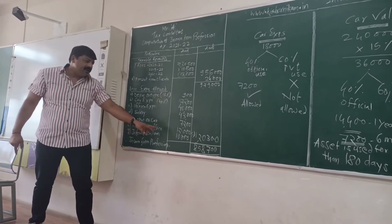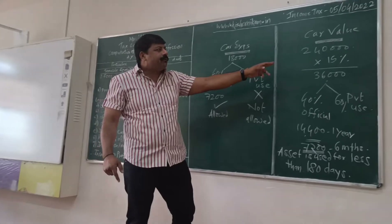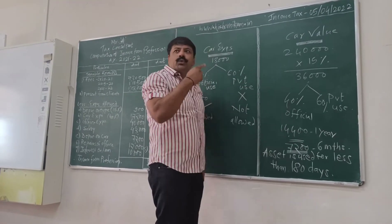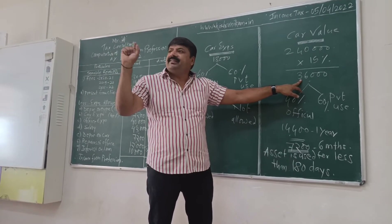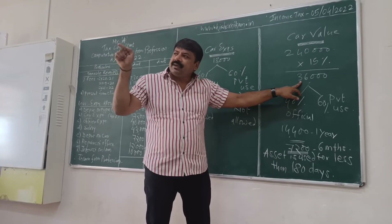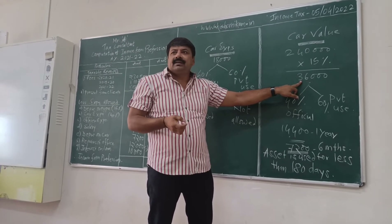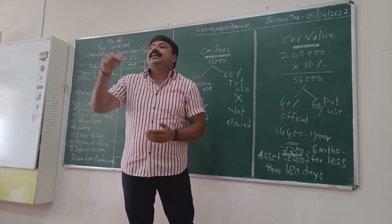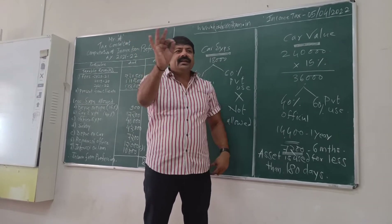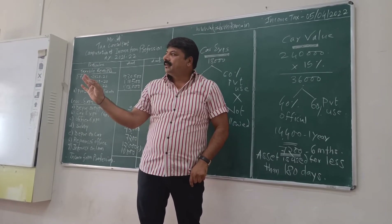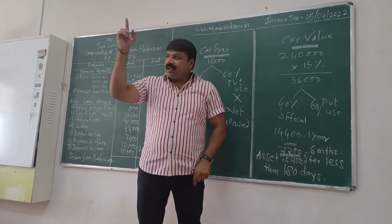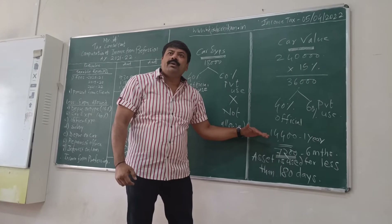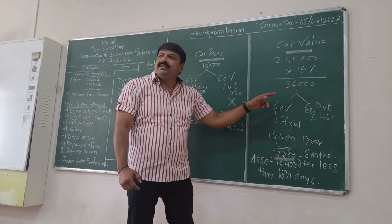Then depreciation on car — I have taken car value 2,040,000 into 15% rate of depreciation. Total depreciation comes to 36,000. But the car is purchased on 10th December. This car is put to use for less than 180 days. Section 32 of Income Tax Act 1961 provides that if the asset is not used for the full year or is used for less than 180 days, only 50% of the amount is considered.